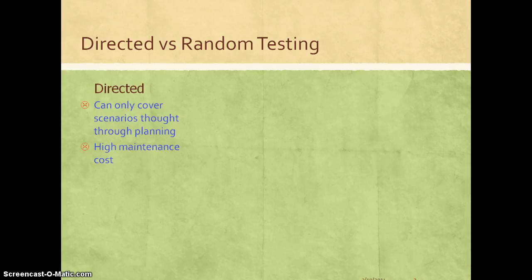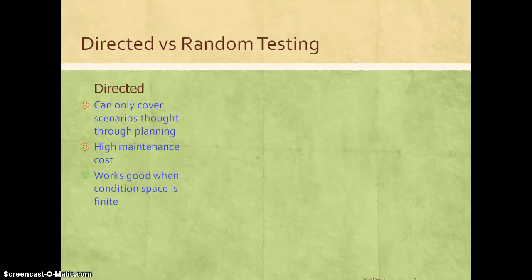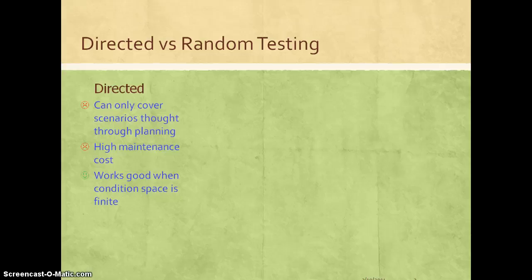Directed testing can only cover scenarios that are planned during the verification planning stage — whatever scenarios or features we can think through must be tested. It comes with high maintenance cost because for every feature we have to create a single test, and based on the number of features the test suite can be huge, requiring maintenance throughout and across projects. This approach works well when the condition space is finite and we can plan for all scenarios.